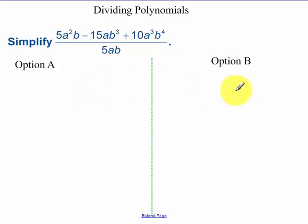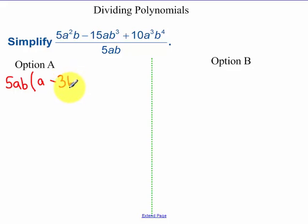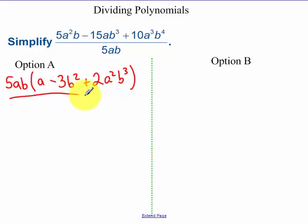There are really two different options you can use to simplify these. The first option is factoring out the GCF from the numerator. The GCF with your exponents — you have to look at the exponents and take the lowest exponent. My lowest exponent is 1, so it's just an a I can factor out. The lowest exponent on the b's is also 1, so we factor that out and are left with a minus 3b squared plus 2a squared b to the third, all over 5ab.